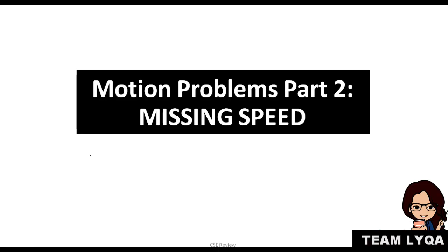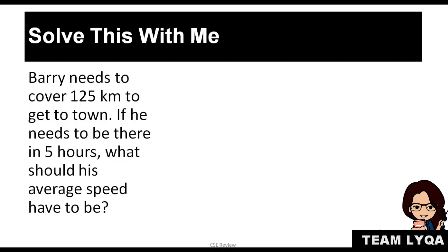Now we're going to talk about motion problems where what's missing is speed. So first problem, the sample is this. Barry needs to cover 125 kilometers to get to town. If he needs to be there in 5 hours, what should his average speed have to be? Now in order for you to fully understand how to use the SDT triangle, please watch part 1 of this series because that's where you'll see how to use it and how to remember it.